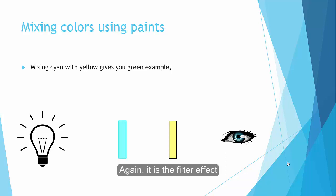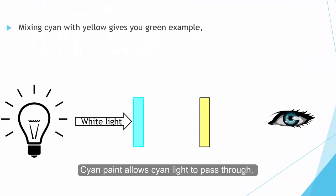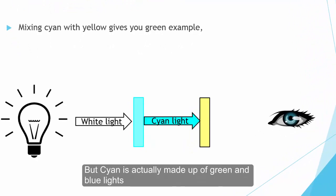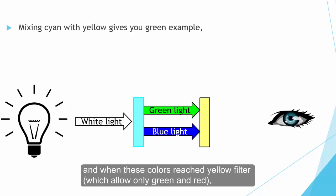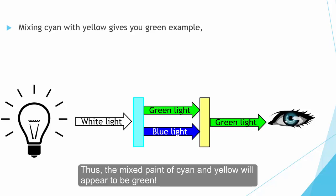Let's use mixing cyan with yellow gives you green as an example. Again, similarly it's a filter effect. In this case, cyan paint will allow cyan light to pass through. But actually cyan is made out of green and blue light. And when this light reaches the yellow filter, which allows only green and red, it will absorb the blue but will allow the green to pass. Thus the mixed paint of cyan and yellow will appear to be green.